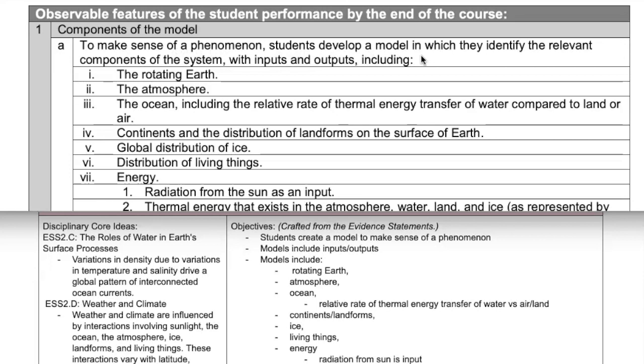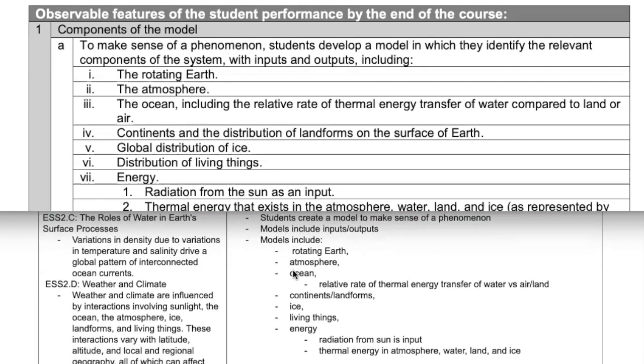But part of this is super simple. Like you can see, I just broke down. Okay, so students create a model to make sense of a phenomenon. That's the first sense, the first part of to make sense of a phenomenon, they develop a model. I am, again, I'm just trying to put it in just very simple terms that I can see really quick, read really quick. You know, it's broken down with inputs and outputs. So I just model includes inputs and outputs. And now here's my list of things that the model is going to include. This is going to be helpful when I create my performance tasks.